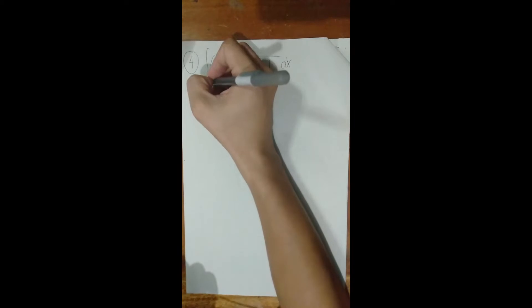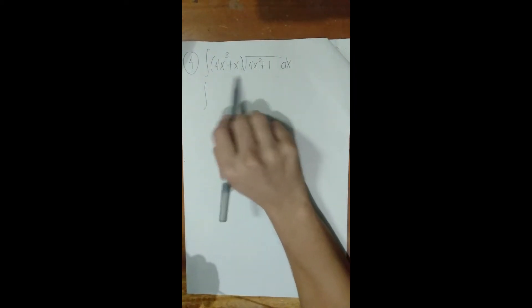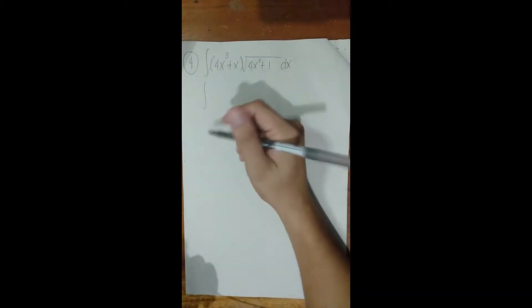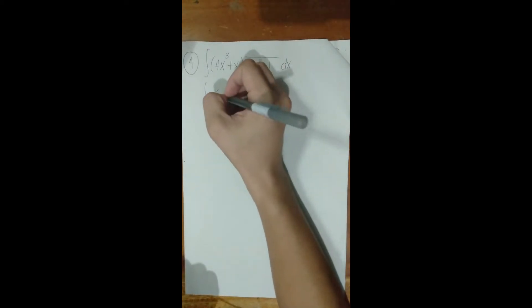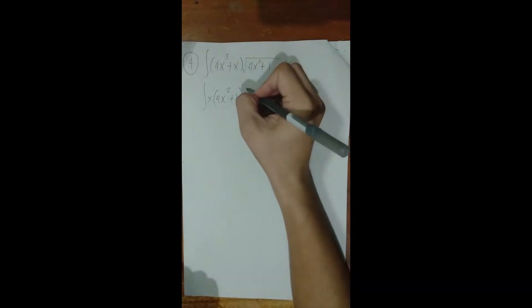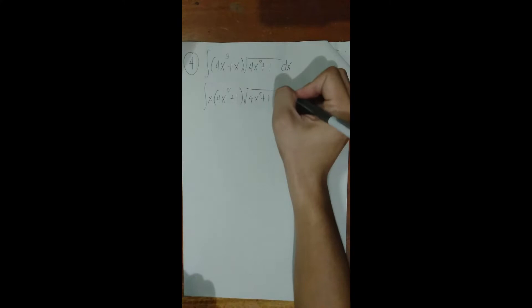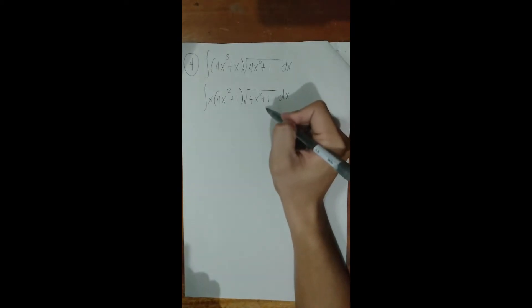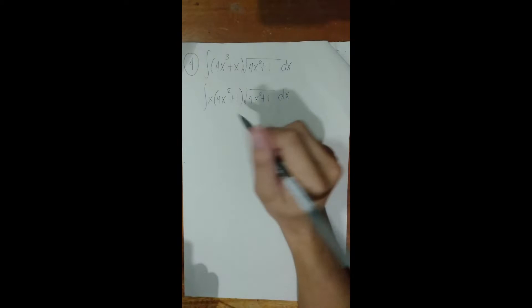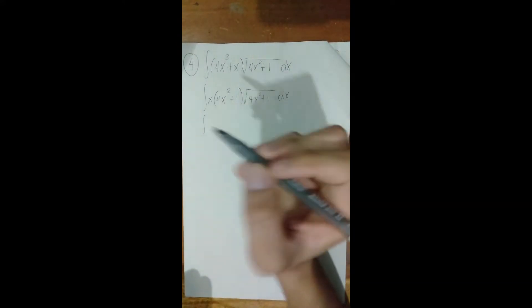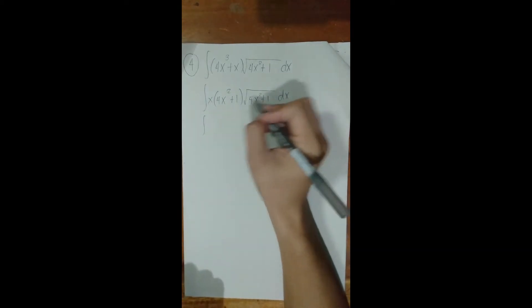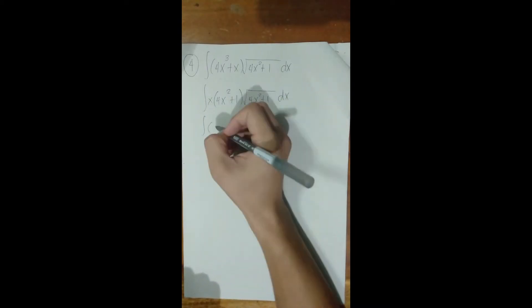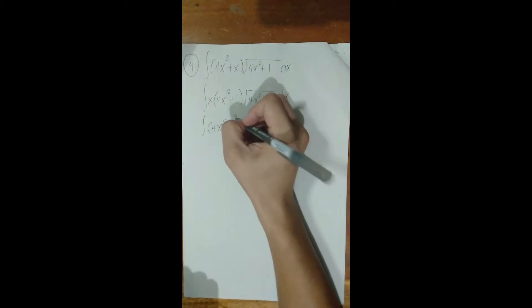Notice that in the first function, x is a common factor. So we factor out x, giving us x(4x² + 1) times the square root of (4x² + 1), dx. Now you notice that both terms share the same base (4x² + 1) — one with exponent 1 and the other under a square root (exponent 1/2). Multiplying same bases adds exponents: 1 + 1/2 = 3/2. So it becomes the integral of (4x² + 1)^(3/2) · x dx.